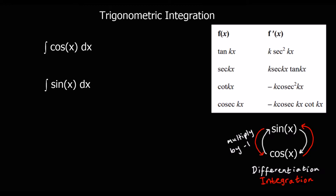In this video we're going to look at trigonometric integration, and we're going to be looking at it as the opposite of differentiation. We've got cos x and sin x that we're going to integrate by doing the opposite to how we differentiated them. The white arrows show differentiation: sin x differentiates to cos x, and cos x differentiates to negative sin x. This time we go backwards — anti-clockwise — so sin x integrates to give negative cos x, and cos x integrates to give sin x.